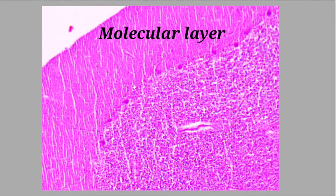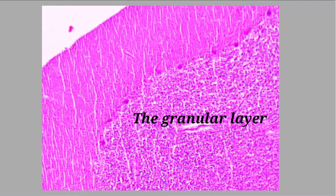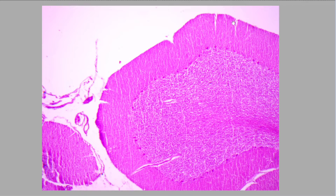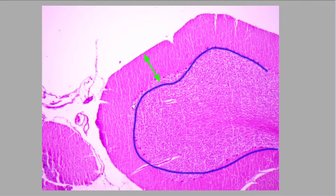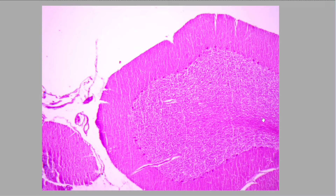There are three layers in the cerebellum. The middle layer is the Purkinje cell layer. The layer which is outside the Purkinje cell layer is known as the molecular layer, and the layer which is deep to the Purkinje cell layer is the granular cell layer. In the center, there are fibers which form the white matter of the cerebellum.